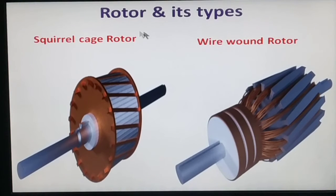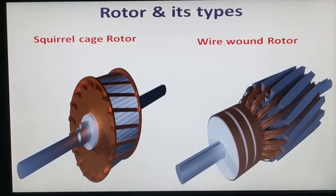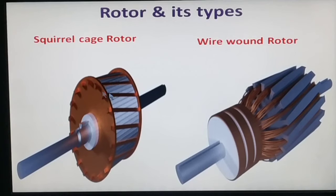The rotor is actually of two types: squirrel cage rotor and wound rotor. The difference is that the wound rotor has three-phase copper winding in the rotor slots, while the squirrel cage rotor has copper or aluminum bars inserted in the slots instead of winding. The bars can be straight or skewed — skewed means the bars are inserted at an inclined angle to the shaft. The skewing of conductors reduces the humming effect and magnetic locking effect.